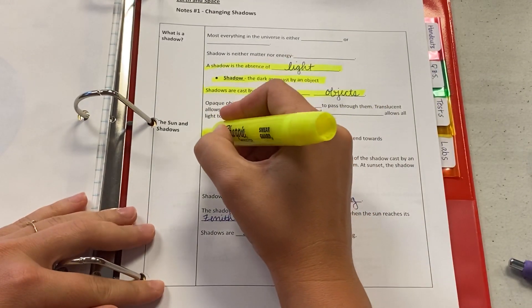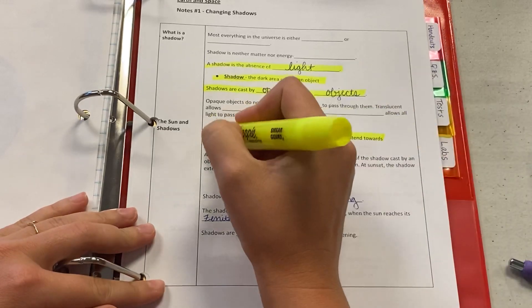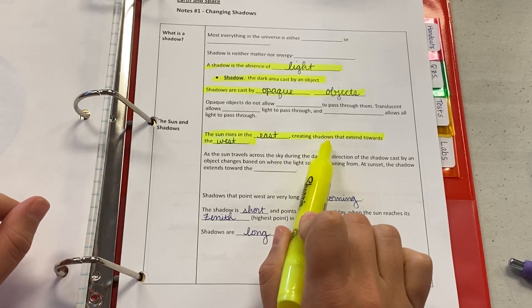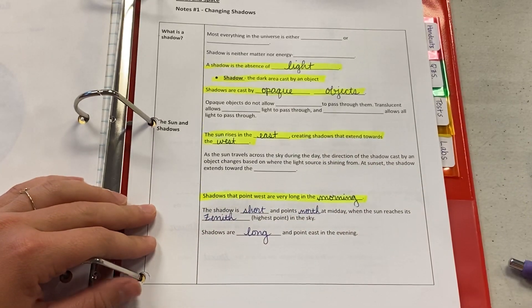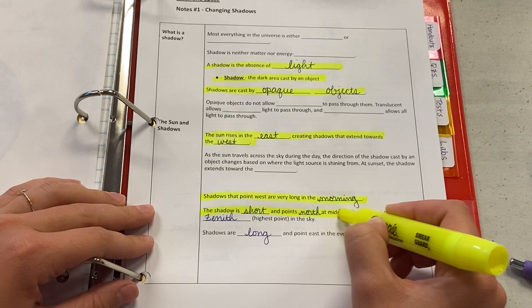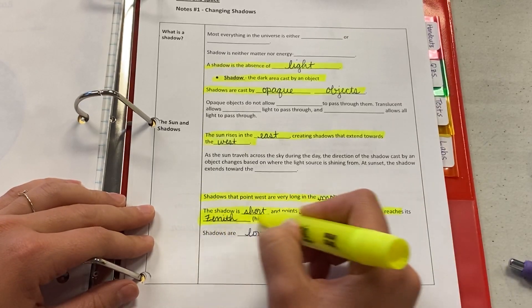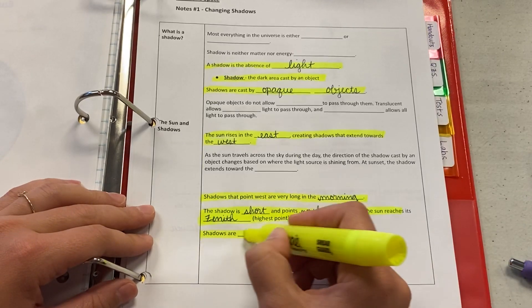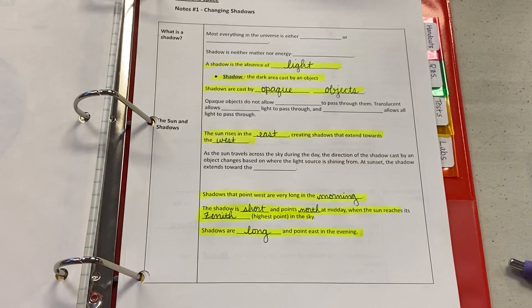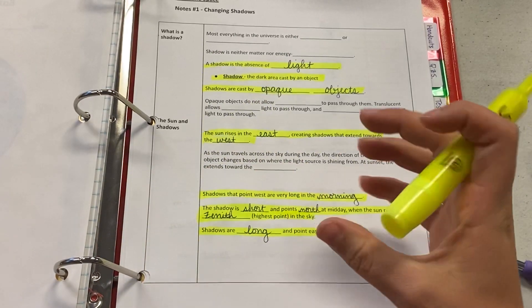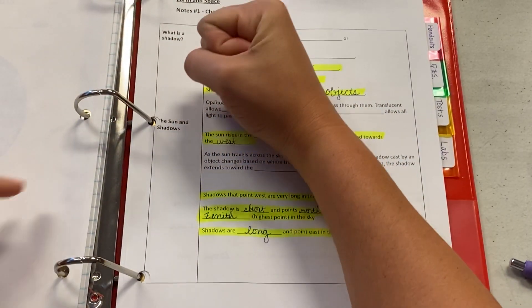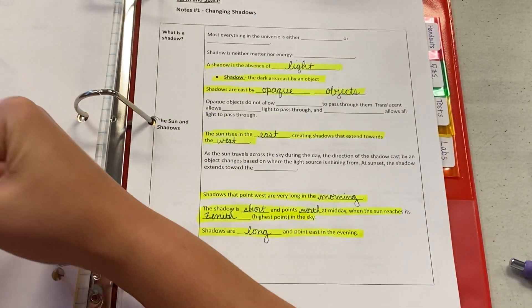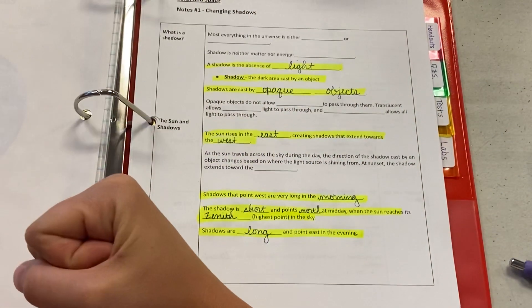You also need to know that the sun rises in the east and sets in the west. Oh, sorry. The sun rises in the east, which creates shadows that extend towards the west. And that they are very long in the morning. Then that they are short and point north at the midday when the sun reaches its zenith or highest point in the sky. And then you also need to know that shadows are long and point east in the evening. So you need to understand that pattern that the sun's in the east, shadows are long and point west. Then as the sun moves across the sky, now when it's midday, they're shorter and right below. And then as the sun moves and sets in the west, the shadows are long again and extend towards the east.